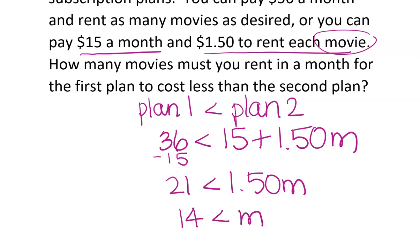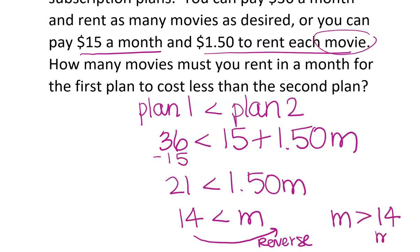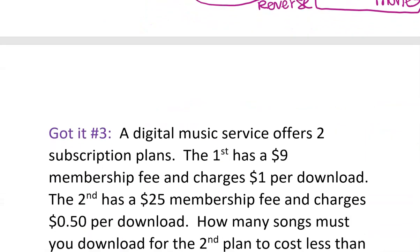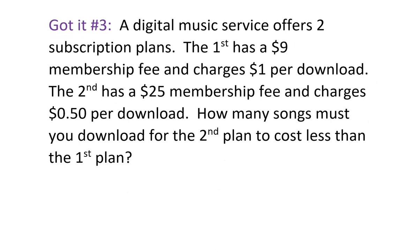I generally like the variable on the left side, so I'll flip the whole thing over and reverse the inequality. That gives m is greater than 14 movies. So how many movies must you rent for the first plan to cost less? You need to rent more than 14 movies. If you rent 13 movies, it doesn't pay. You can pause now and try 'got it' question number three, then go back and check your answer.